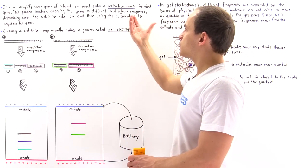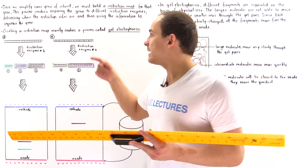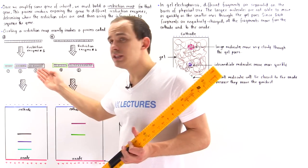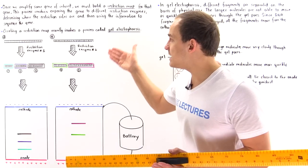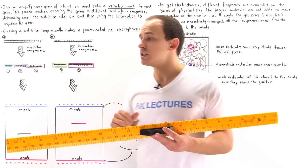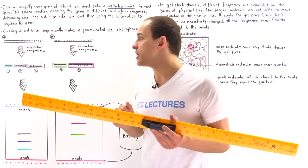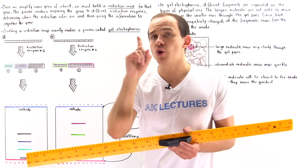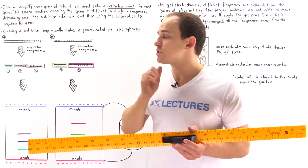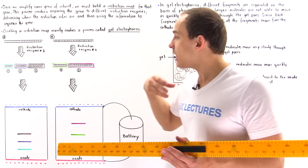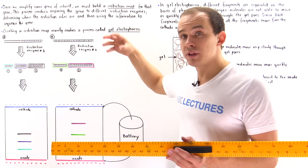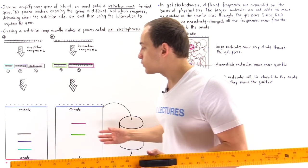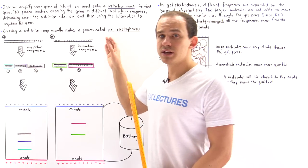To create the restriction map, we expose the initial gene to many different types of restriction enzymes. In case A, we expose the gene to restriction enzyme number one and form three different fragments of different sizes. In case B, we take that same initial gene but expose it to a different restriction enzyme, which cuts at a different location along the gene. This enzyme only has one restriction site, so it produces only two fragments: fragment four and fragment five. We place these two fragments into our gel for size-based separation, and we compare this to case A to create our restriction map.